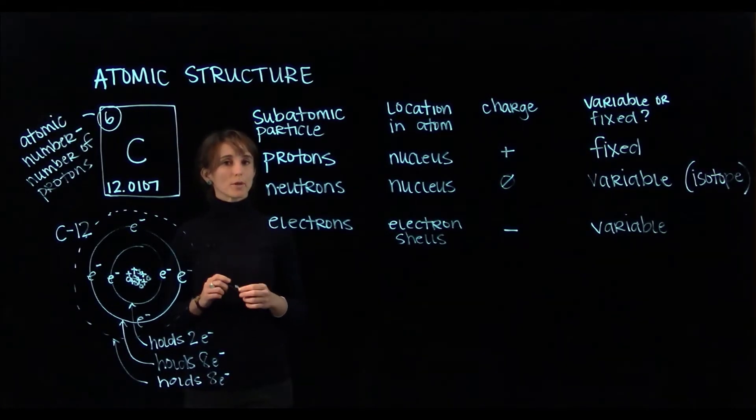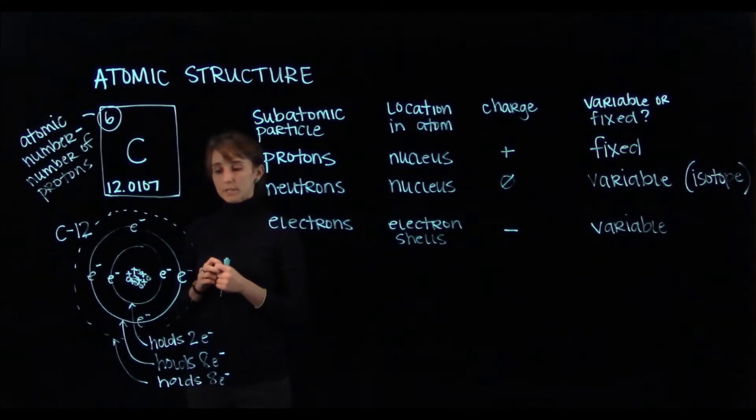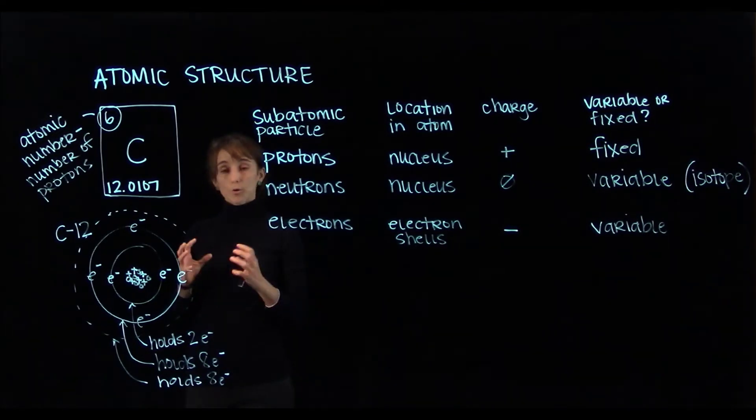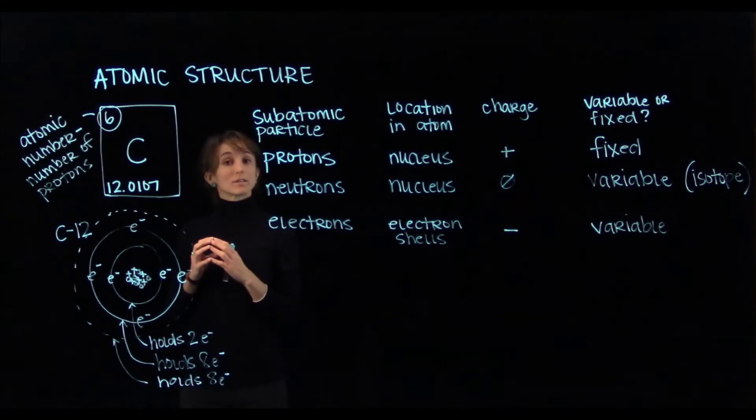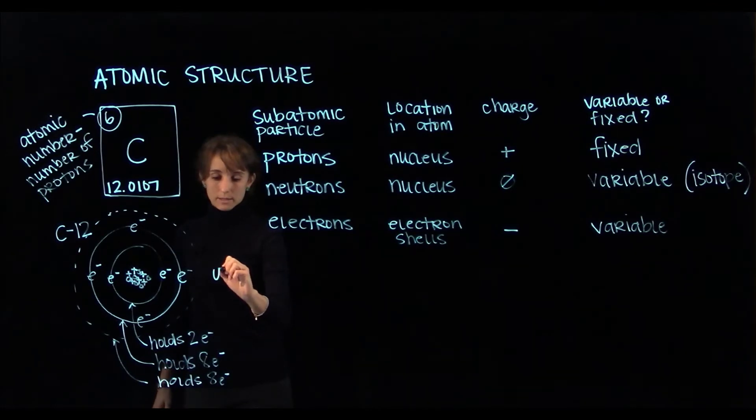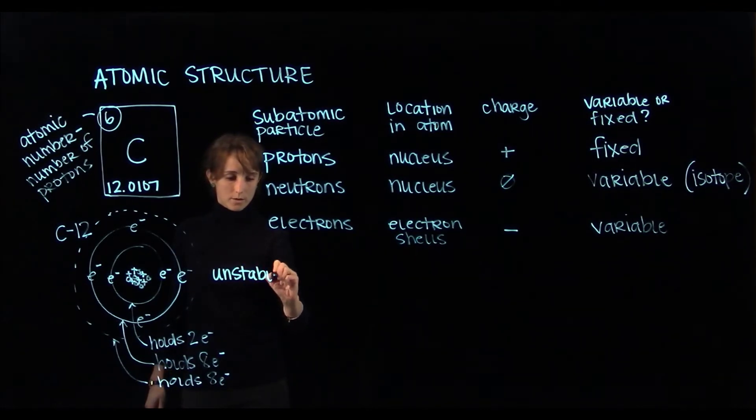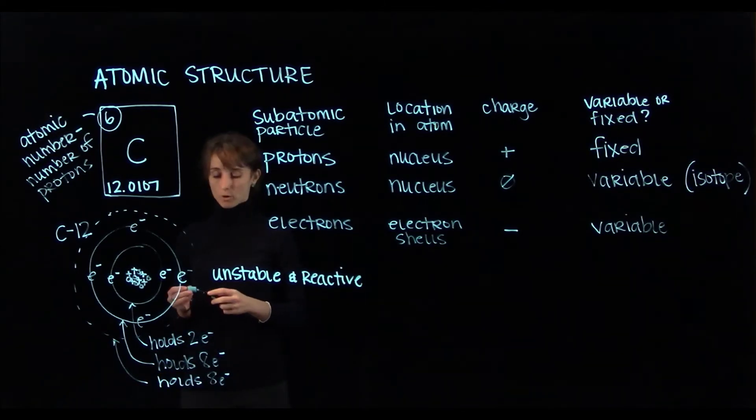It's important to remember the number of electrons that each shell can hold, because that's how we can determine whether an atom is stable or unstable. If we take our example of carbon, the outermost shell of the carbon atom can hold eight electrons, but as is, it only contains four. That means there are four vacancies in the outermost shell. Any time an atom has vacancies in its outermost electron shell, we say that the atom is unstable and it is reactive, which means that it will participate in chemical bonds.